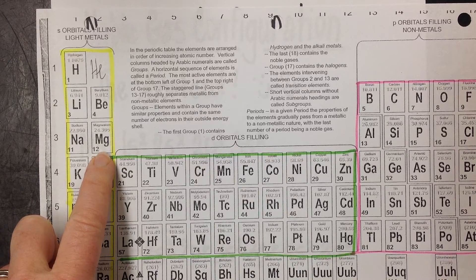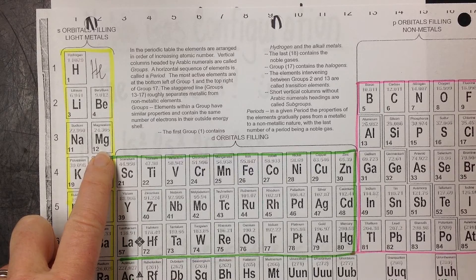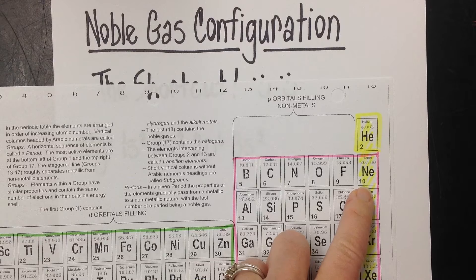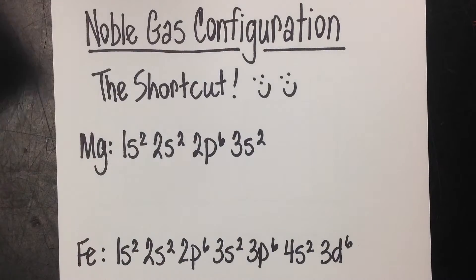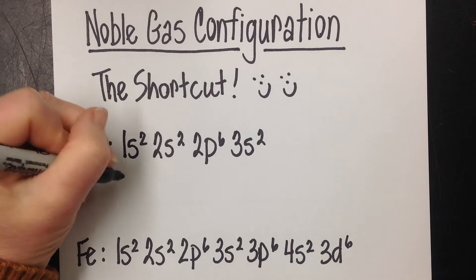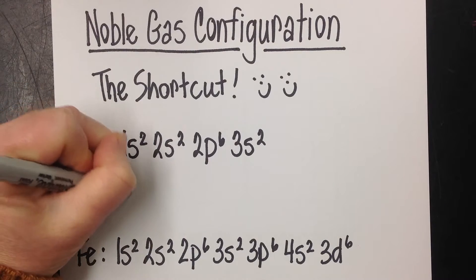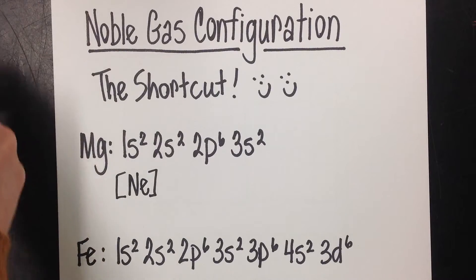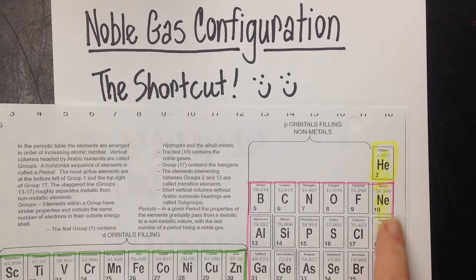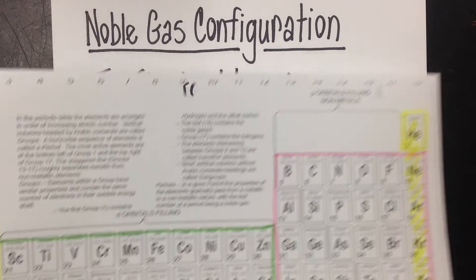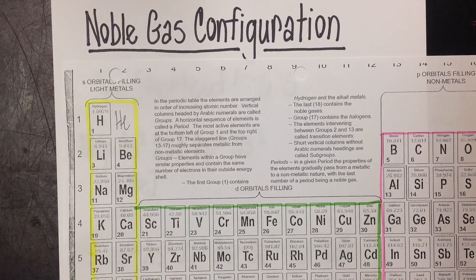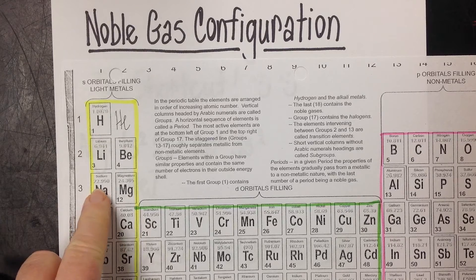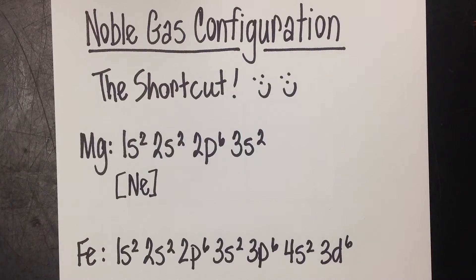Think about counting backwards to the noble gas that came right before magnesium. So 12, 11, 10. That noble gas would be neon. We're going to put neon in brackets. You know where neon is? From neon, what comes next? We're going to drop down to the next row, 3s1, 2 to 3s2.